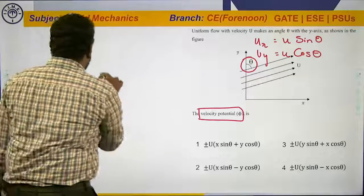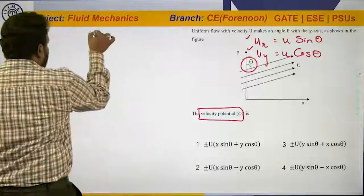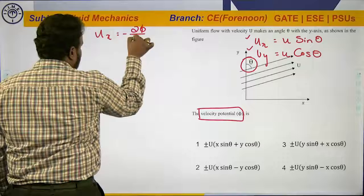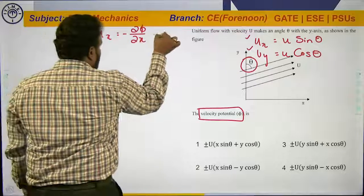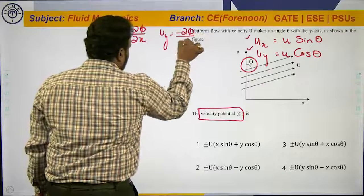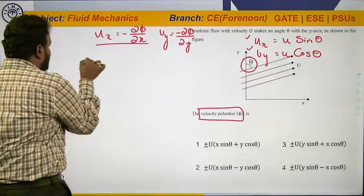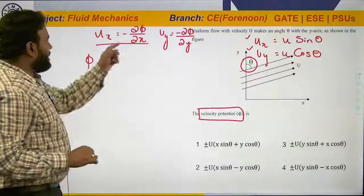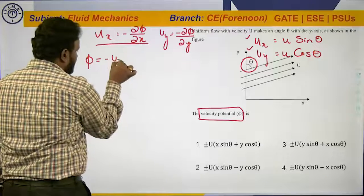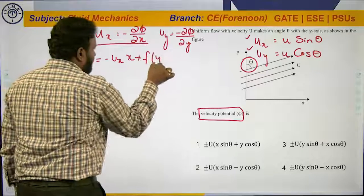From the concepts we have dealt with, from the velocity potential function we can write: ux = −∂φ/∂x and uy = −∂φ/∂y. To find the value of phi, we integrate the x-component equation, giving φ = −ux · x + f(y) + c.